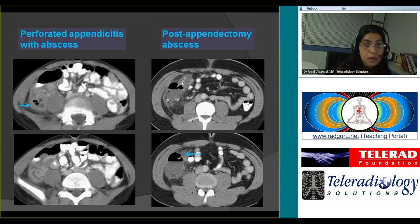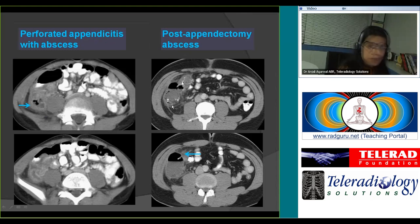Cases of perforated appendicitis: there is abscess formation and a lot of inflammation. You can see the thickened cecal wall and the terminal ileum, and this is a multi-loculated air-fluid collection. This patient had a recent appendectomy and developed an air-fluid collection in the right lower quadrant — a case of post-appendectomy abscess.